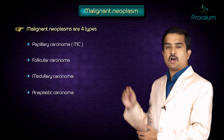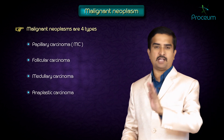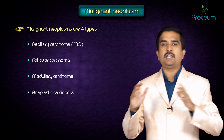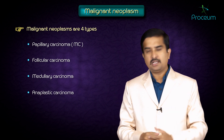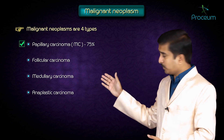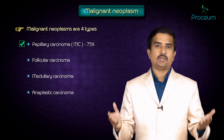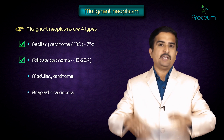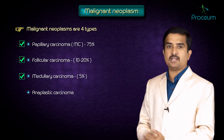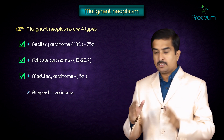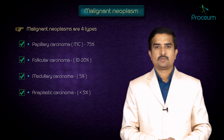Moving on to malignant neoplasms, there are four types. The first and most common is papillary carcinoma, seen in approximately 75% of cases. The second is follicular carcinoma, seen in approximately 10–20% of cases. Medullary carcinoma is seen in 5% of cases, and the least common is anaplastic carcinoma, seen in less than 5% of cases.